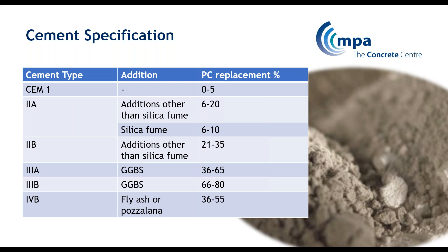These are broad categories, and there are much more detailed categories listed in the code. You can see that you can have up to CEM3B, GGBS — Granulated Blast Furnace Slag — which can go up to 80% replacement. We'll go through some of these other additions and also Portland cement in a moment.